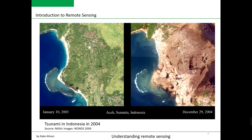This time we are looking at a different sensor called IKONOS — a commercial satellite. We are looking at part of the Sumatra island in Indonesia. The first image shows part of Sumatra over the province of Aceh on the 10th of January 2003, and the second image shows the same area on the 29th of December 2004.